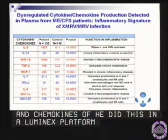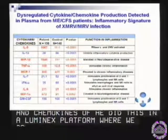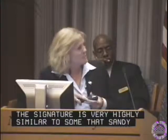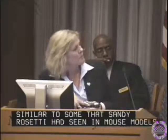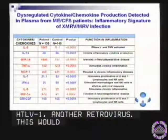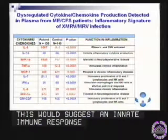Interestingly, this signature is very highly similar to some that Sandy Resetti had seen in mouse models of neurodegenerative diseases with MLV viruses, and similar to what Frank Resetti showed in ATL patients — patients infected with HTLV-1, another retrovirus. This would suggest an innate immune response. So we next wanted to show: is there an adaptive immune response to the virus?